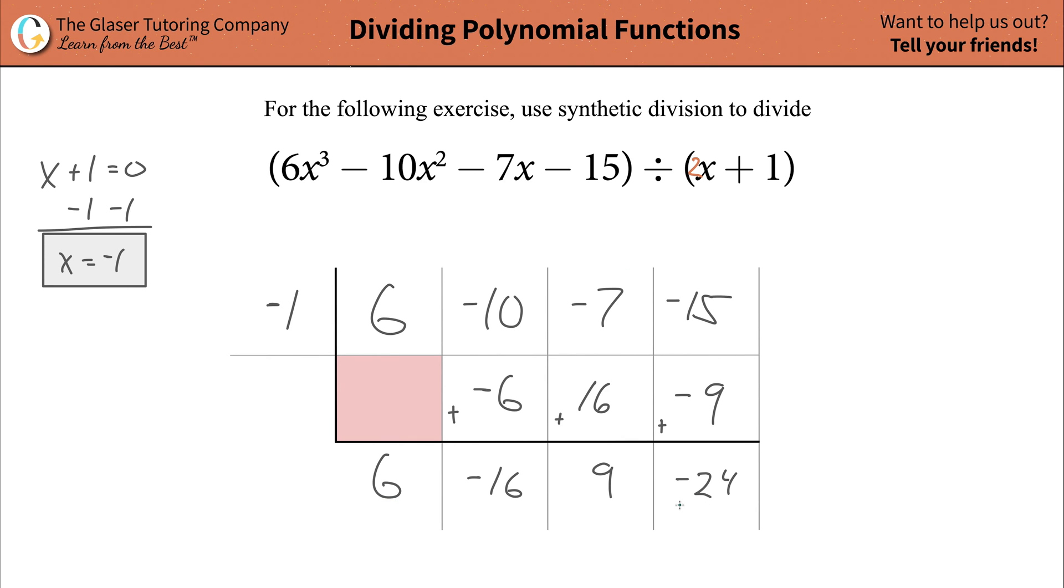Now, remember what all of these terms represent. This is your remainder. And this is the first coefficient of your constant term. This is the coefficient of your x term. This is your coefficient of your x squared term, and it could be x cubed if you had more columns to the table. It'll always follow this pattern, by the way, ladies and gentlemen.